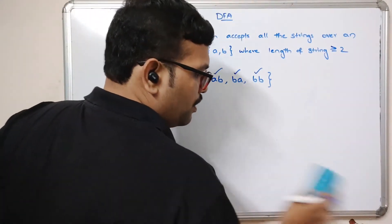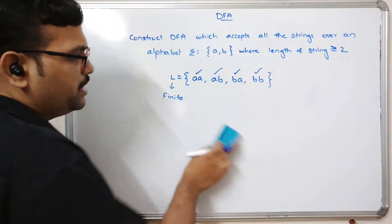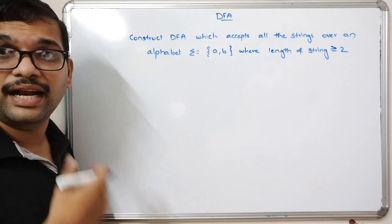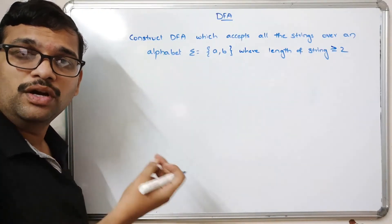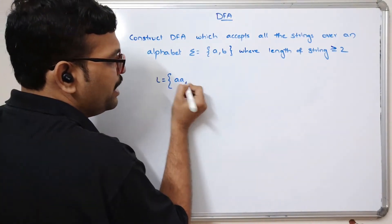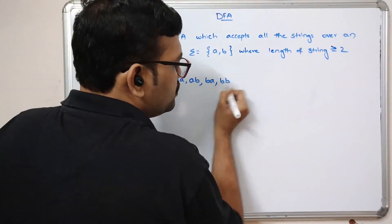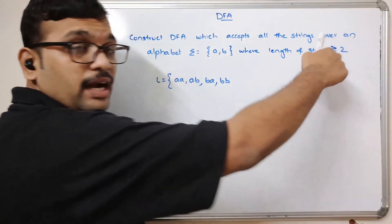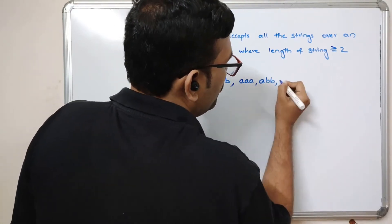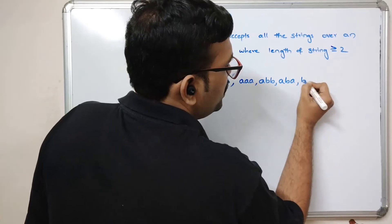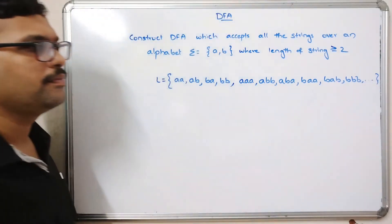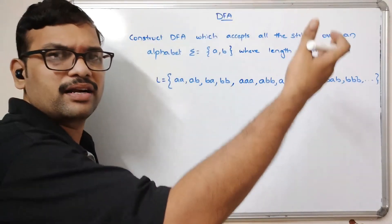Now let's construct the DFA for length greater than or equal to two. This is an infinite language because the minimum length is two but the maximum can be any number. The language includes: aa, ab, ba, bb (length 2), then all length-3 strings aaa, aab, bab, abb, bbb, and so on.